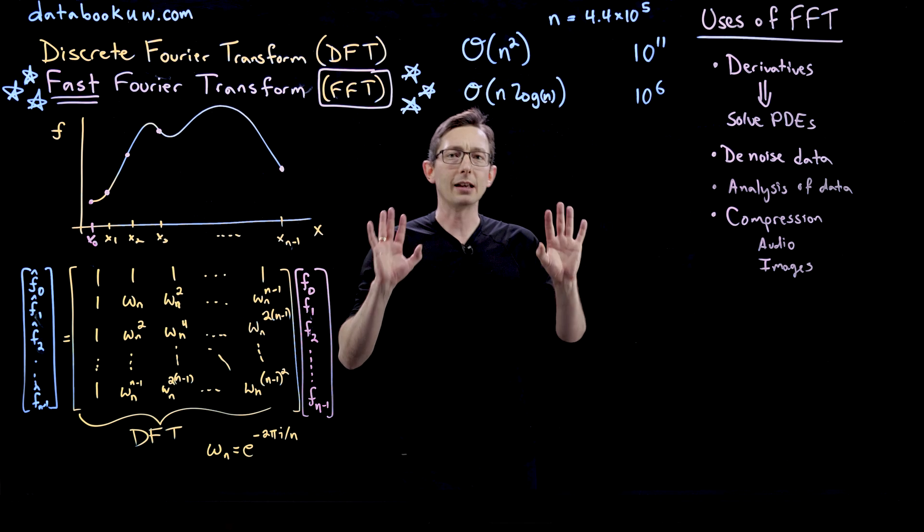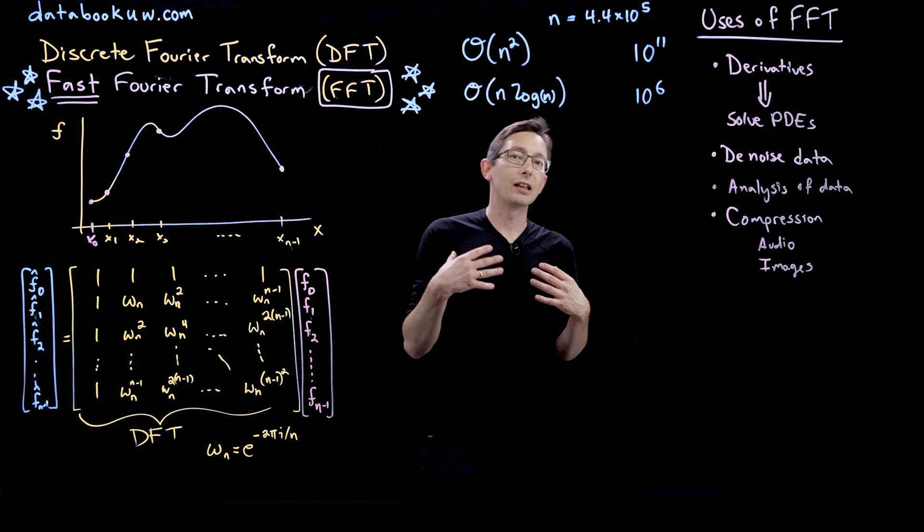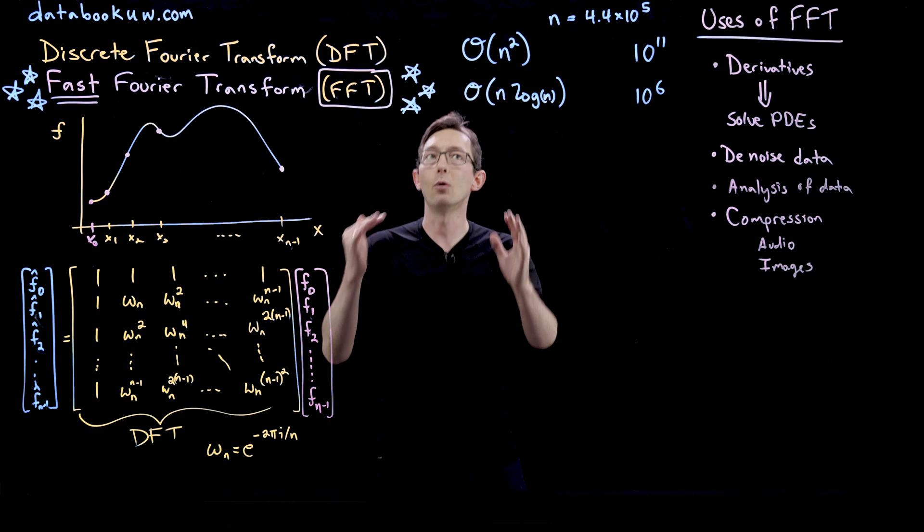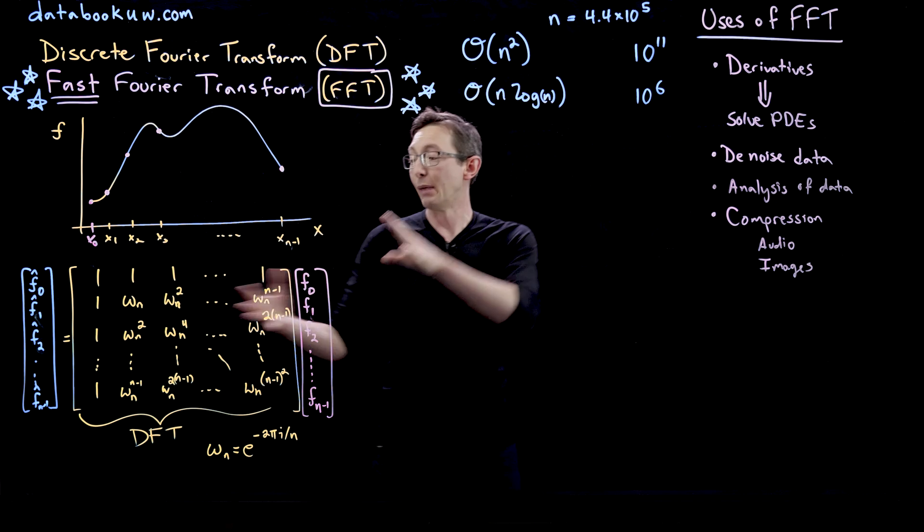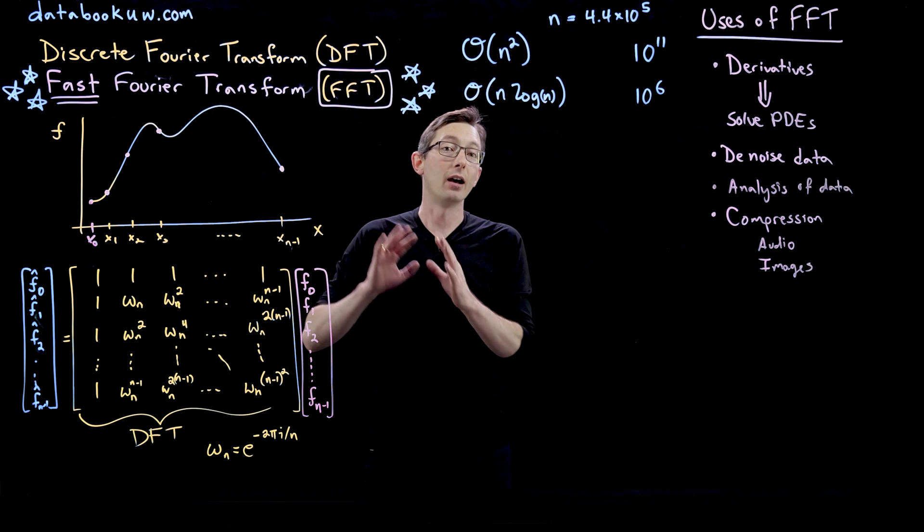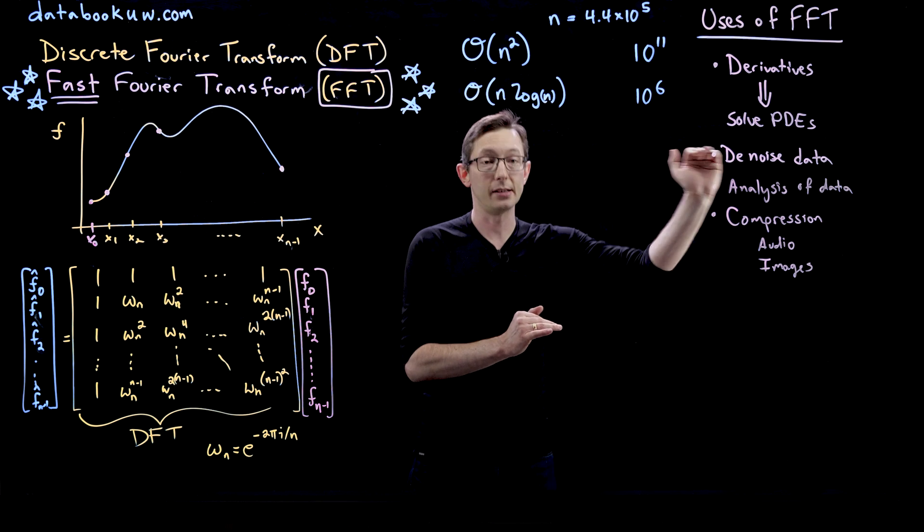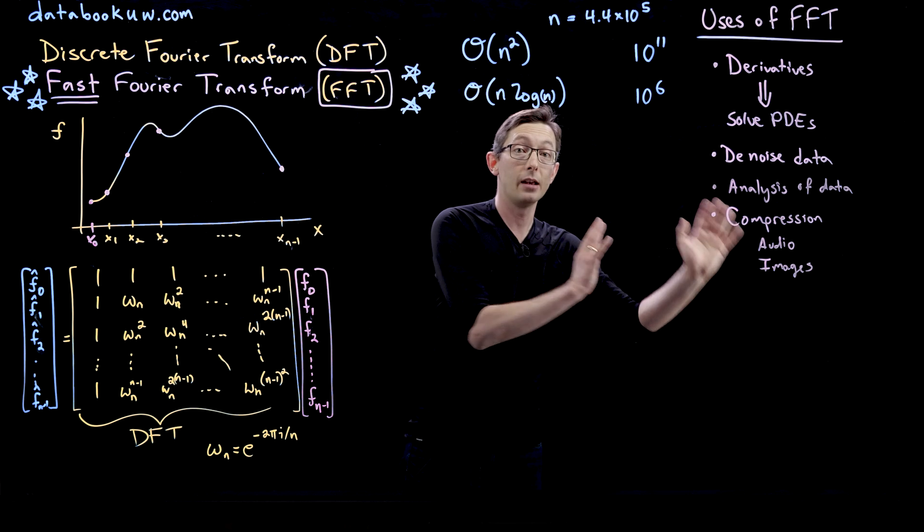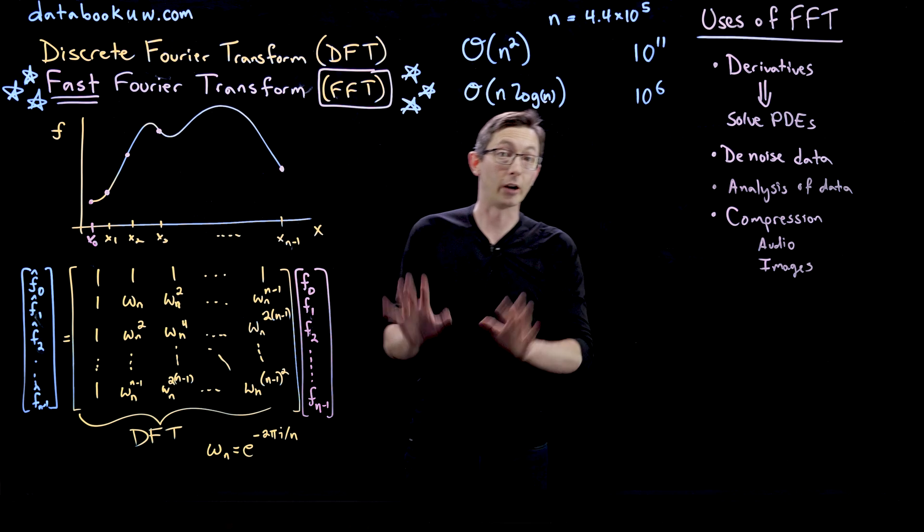I think in the next short video, I'm going to give you just a flavor for how we can get away with this scaling by bypassing this big matrix multiplication and doing something a little bit smarter instead. And then I'm going to code up some examples for all of these bullets in MATLAB and in Python. Thank you.